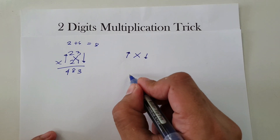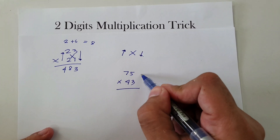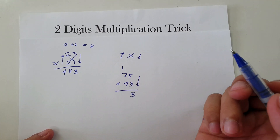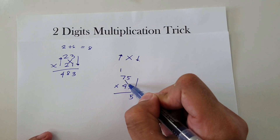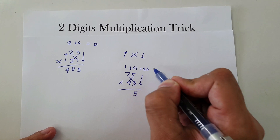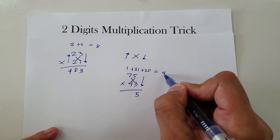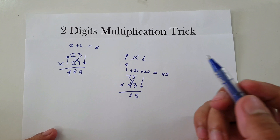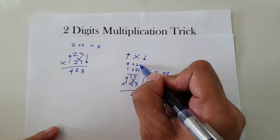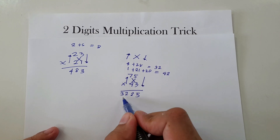Next, let's have 75 times 43. First, down: 5 times 3 is 15 — write 5, carry 1. Then cross: 7 times 3 is 21, and 5 times 4 is 20; add the carry: 1 plus 21 plus 20 is 42 — write 2, carry 4. Then up: 7 times 4 is 28, plus the carried 4 is 32. Therefore 75 times 43 is 3,225.